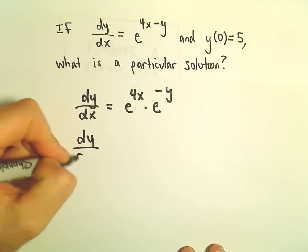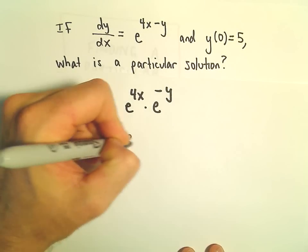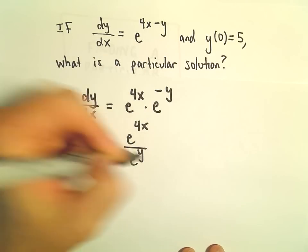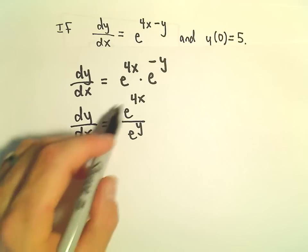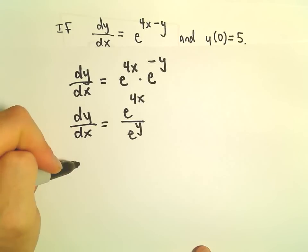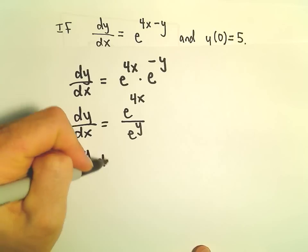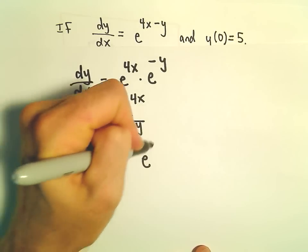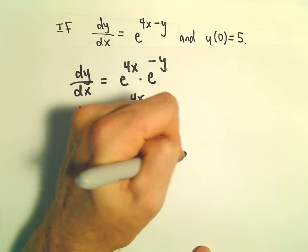So dy/dx, I'm going to rewrite this as e^(4x) over e^y. Now I'm just going to cross multiply, so we'll have e^y dy = e^(4x) dx.